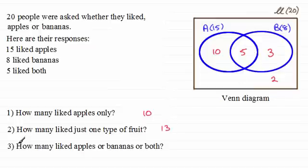And then finally for three, how many liked apples or bananas or both? Well, that's got to be the 10 here, the 5 and the 3. A total of 18. So we've got 18 there.